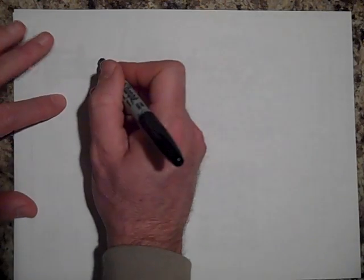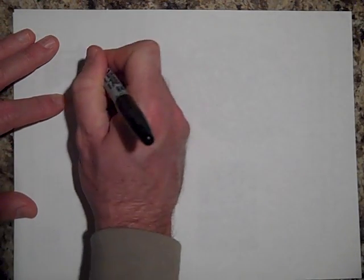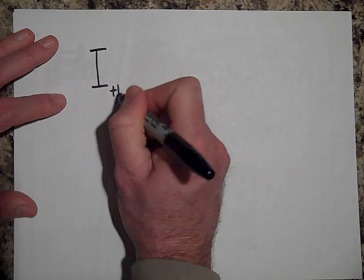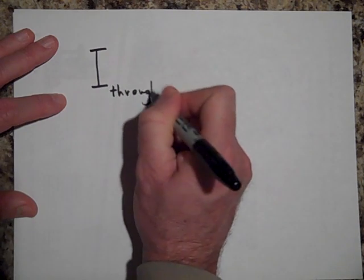So it goes like this: if you would like to know the current through a resistor, I is the current through a resistor. Current flows through resistors.